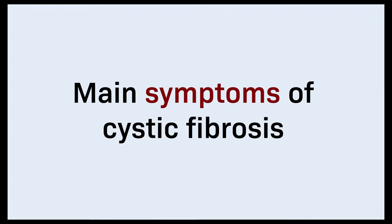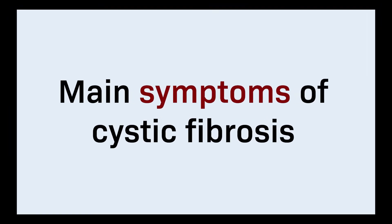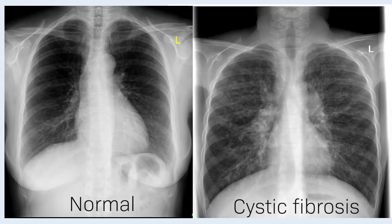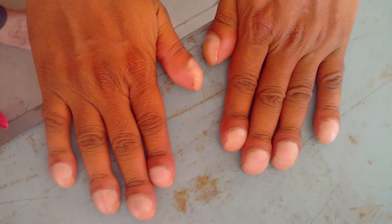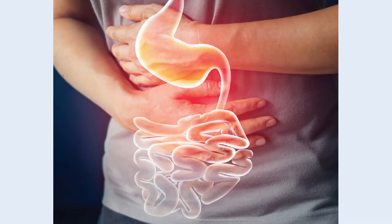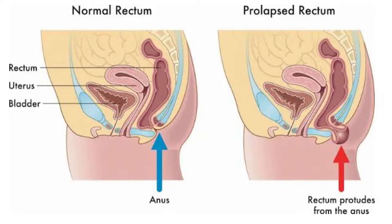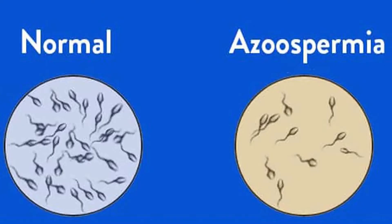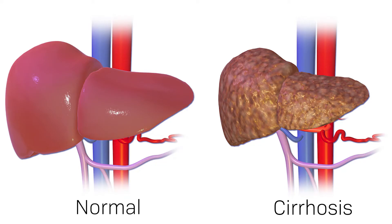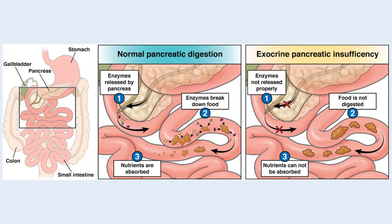The symptoms of Cystic Fibrosis include but aren't limited to: chronic cough and sputum production, shortness of breath, radiographic abnormalities, clubbing or enlargement of the fingertips and toes, poor growth or weight gain despite having a good appetite, frequent greasy bulky stools or difficulty with bowel movement, rectal prolapse, nasal polyps, absence of sperm in ejaculate, salt loss syndromes, cirrhosis, and pancreatic insufficiency.